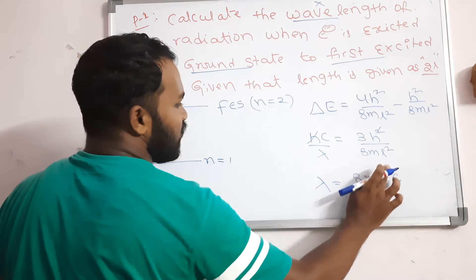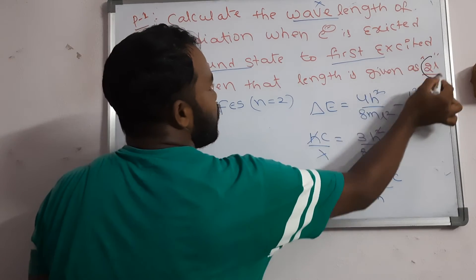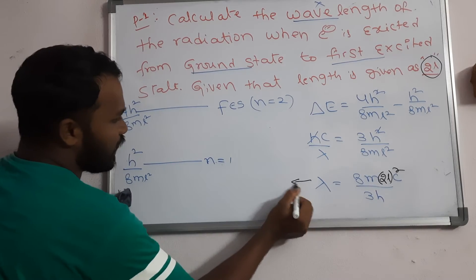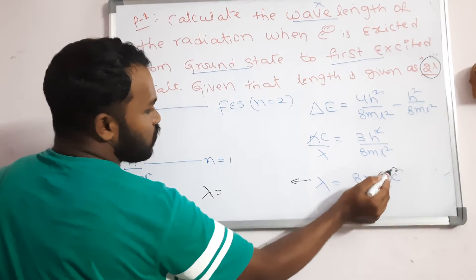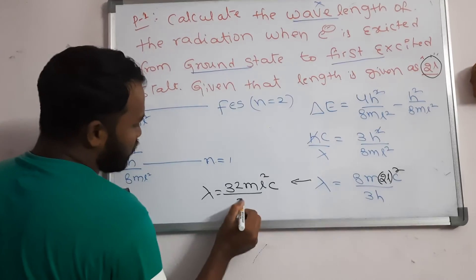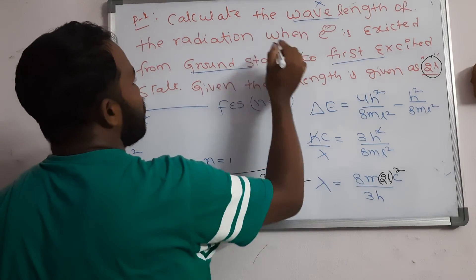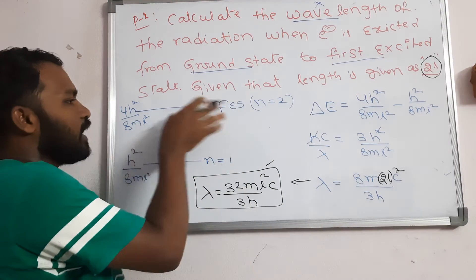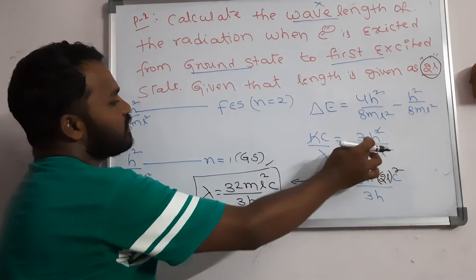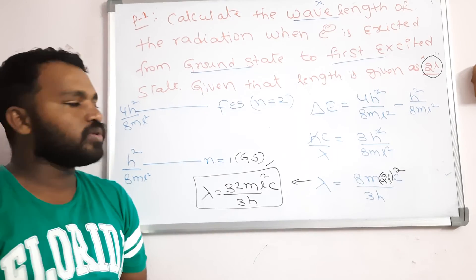Now substitute L = 2L, so L² becomes (2L)² = 4L². Therefore lambda = 8m(4L²)c / 3h = 32mL²c / 3h. This is the wavelength of the radiation when the electron is excited from the ground state to the first excited state.